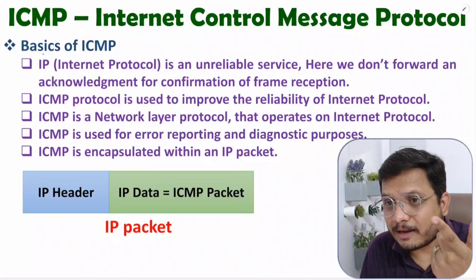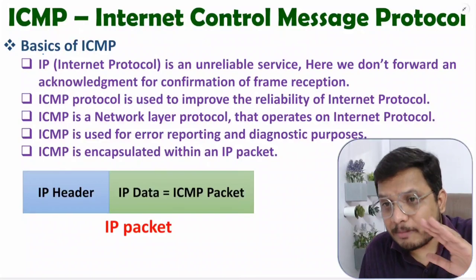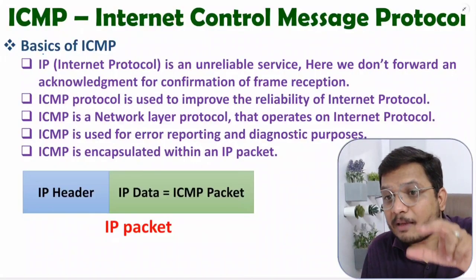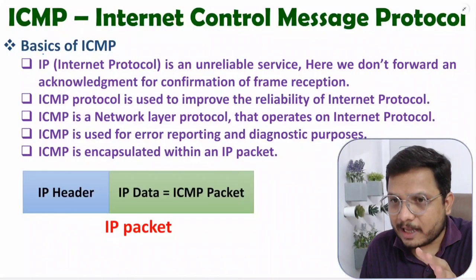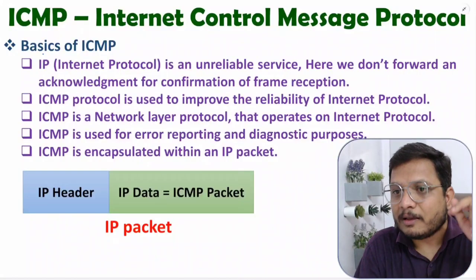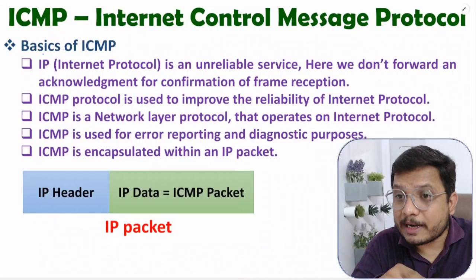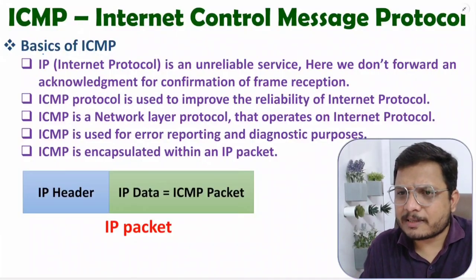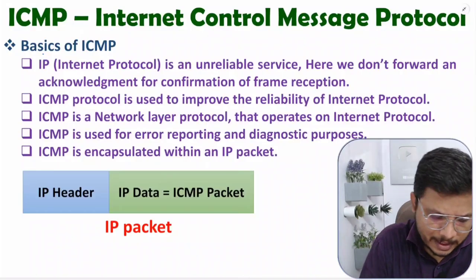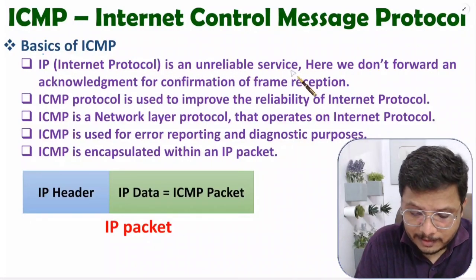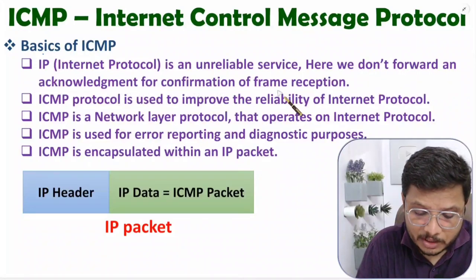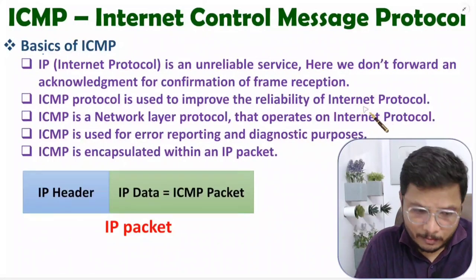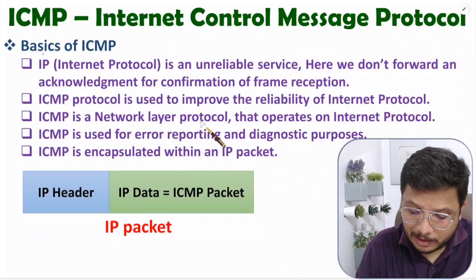To improve IP's reliability, ICMP is implemented. With ICMP, we can inform the sender that a frame was lost somewhere in the medium, and also tell the sender the reason why the frame was lost. So practically, ICMP is implemented on IP to improve reliability. IP is an unreliable service because no acknowledgement is forwarded for confirmation of frame reception.